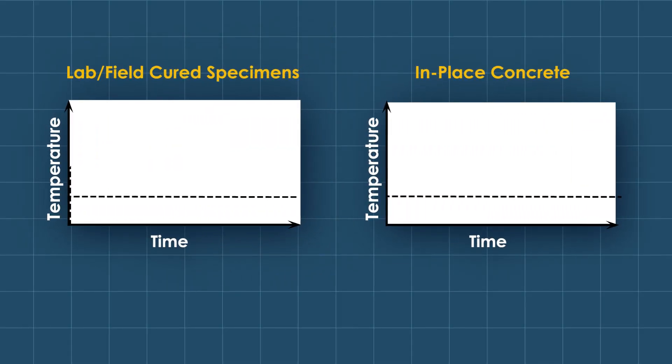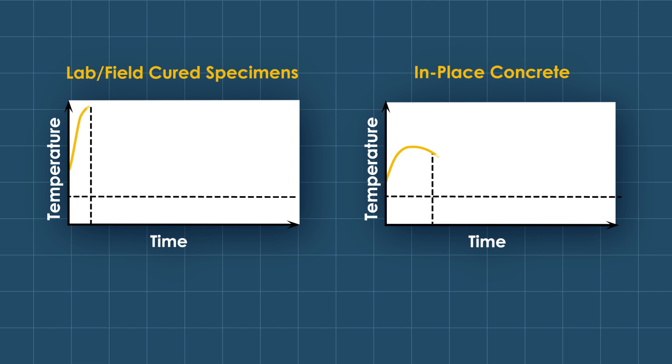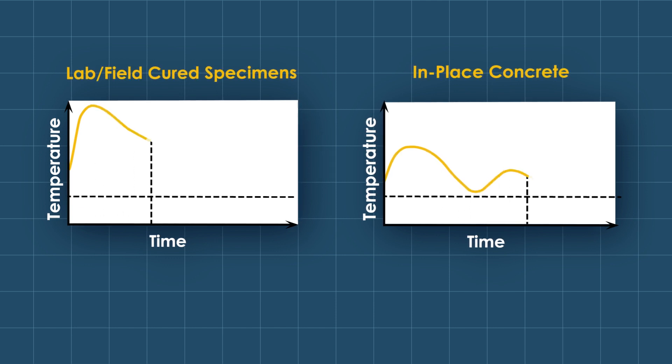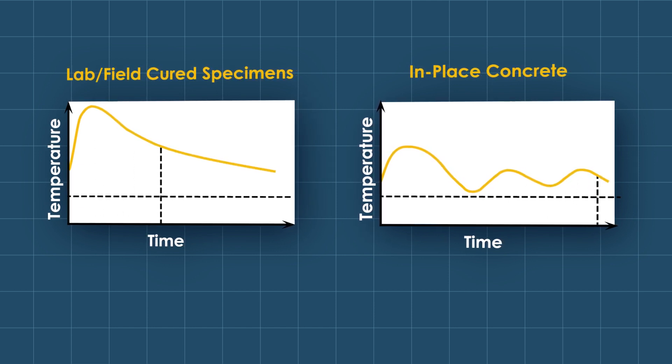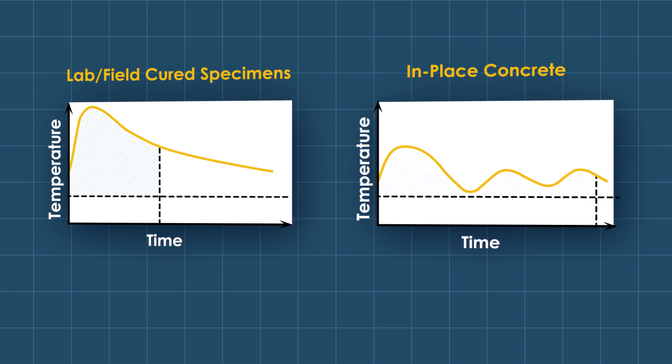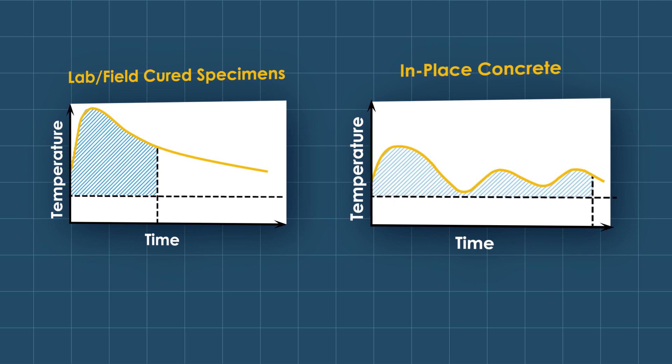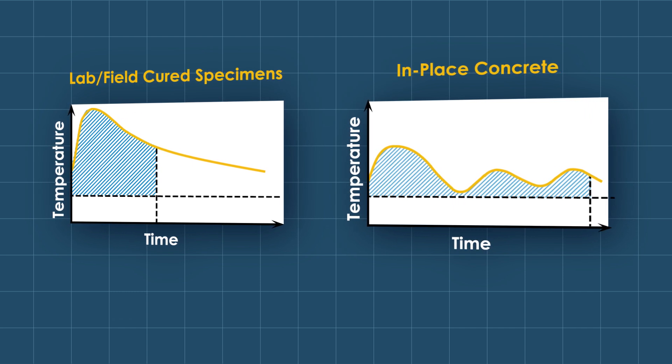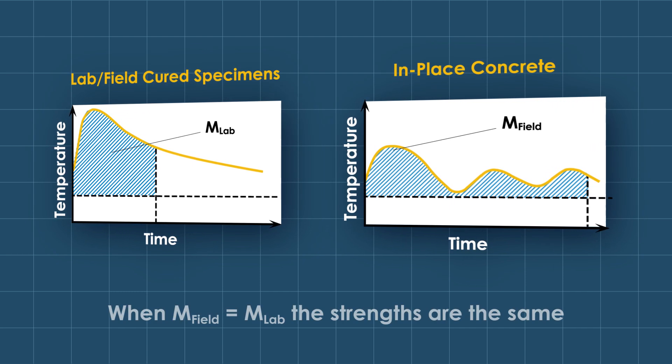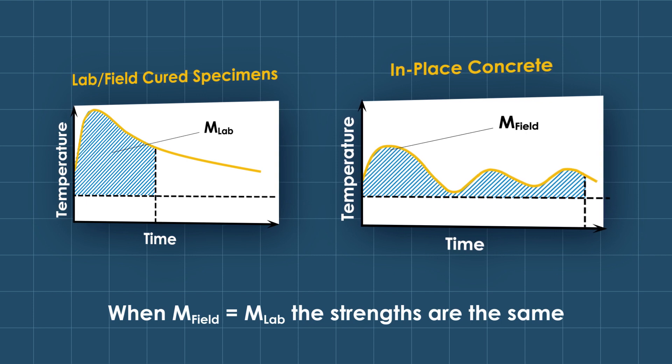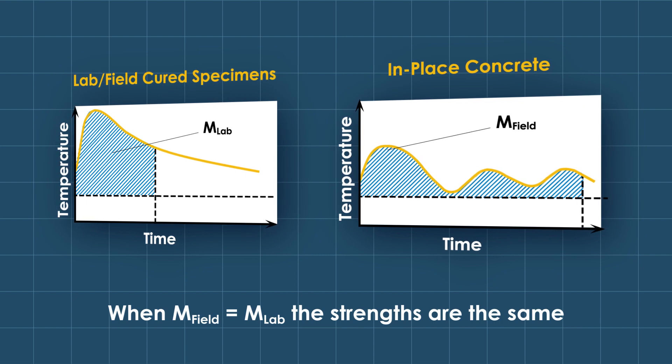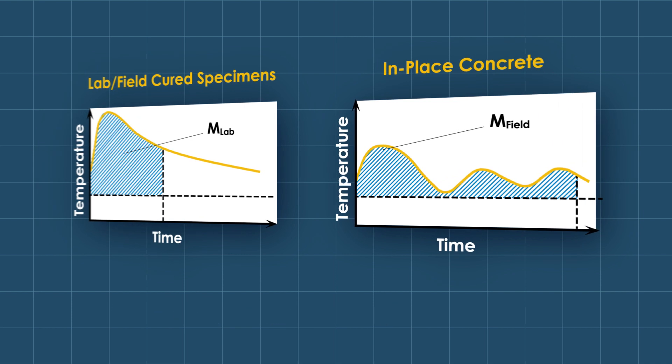Concrete strength is a function of its time and temperature history. The area beneath the time-temperature curve is defined as its maturity. Strength develops as cement hydrates. Maturity is a measure of how far hydration has progressed. The method assumes that samples of a given concrete mixture attain equal strengths if they attain equal values of maturity, regardless of the conditions.